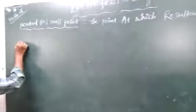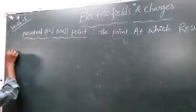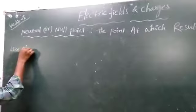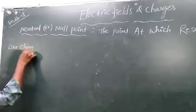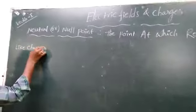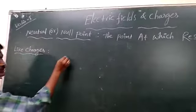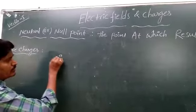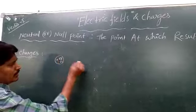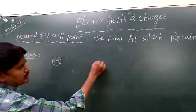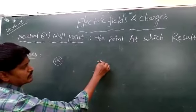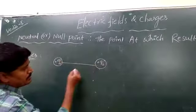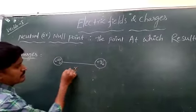Let us consider like charges. Like charges means positive charges. So this is Q1 plus, next plus Q2. These two charges are separated by a distance.